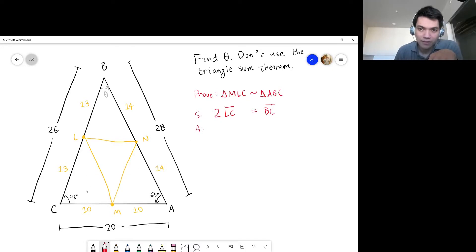The angle is 72. So angle LCM is equal to angle BCA, and everything is equal to itself. So they're both equal to 72 degrees. And then the last side, segment CM, two times segment CM is the length of segment CA. Two times 10 is 20. And so we have proven that triangle MLC is similar to triangle ABC by side angle side.